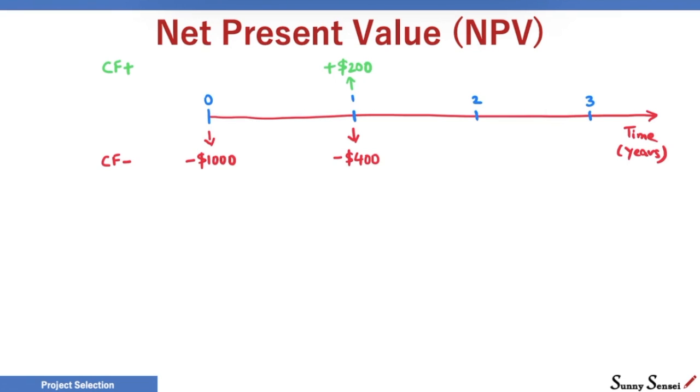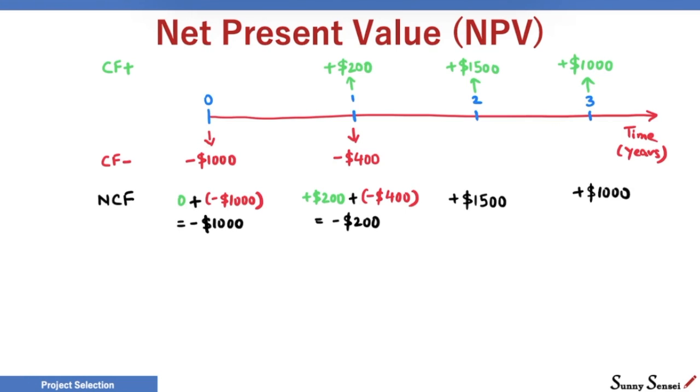We have only positive cash flows for year 2 and year 3. Next, we will find the net cash flow, the total cash flow at a given point in time. For time 0, net cash flow is minus $1000. Similarly, we have minus $200 net cash flow for year 1, plus $1500 for year 2, and plus $1000 for year 3.